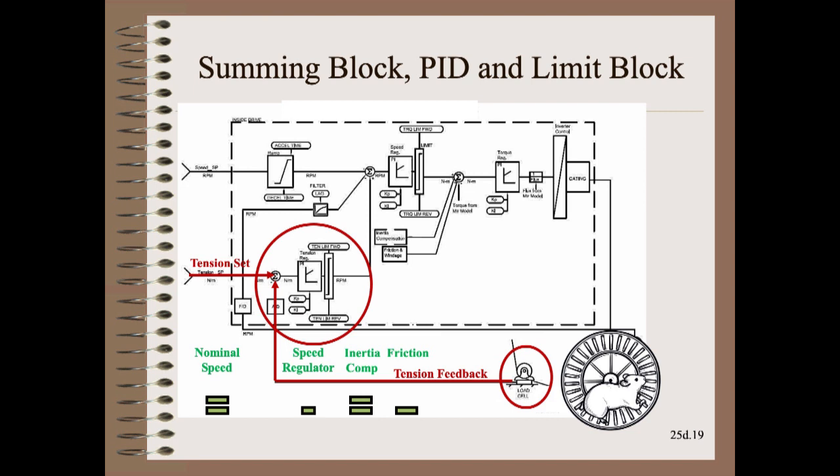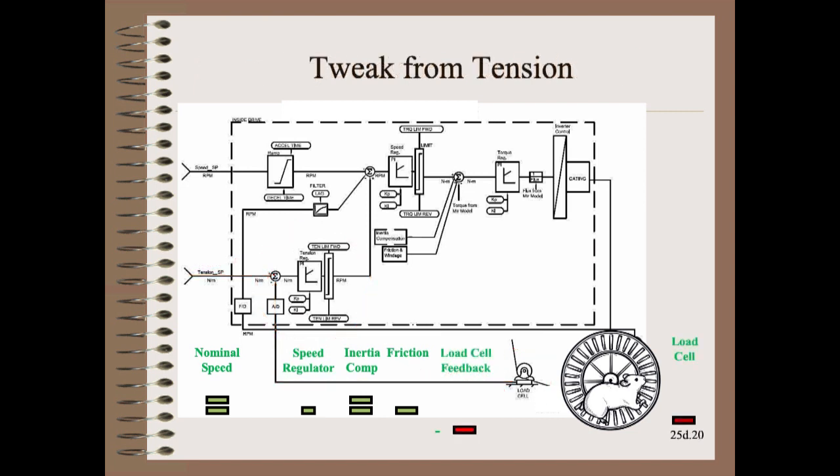So, we run the signal from the load cell to a summing block for negative feedback, a PID to calculate appropriate corrections, and a limit block to protect the web — much as we did for speed. The only complication is that there are another dozen tuning parameters that must be set up here. Our very smart squirrel notices that the load cell reading is running a little bit high and calculates he needs to subtract a food pellet to smoothly, quickly, but stably bring the tension back down.